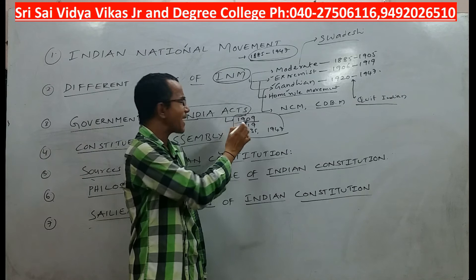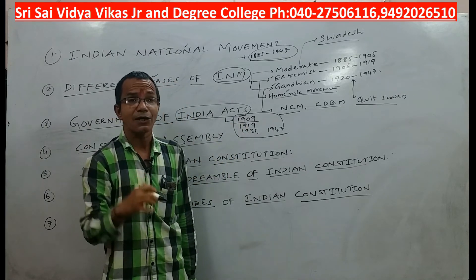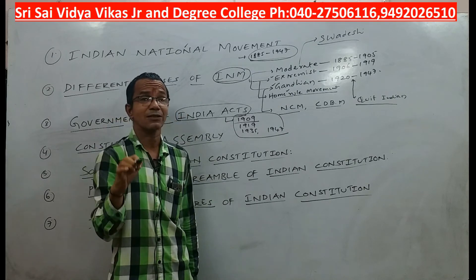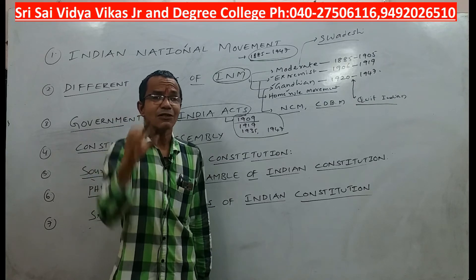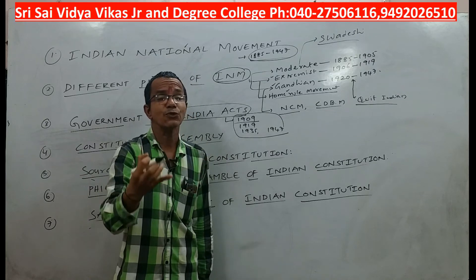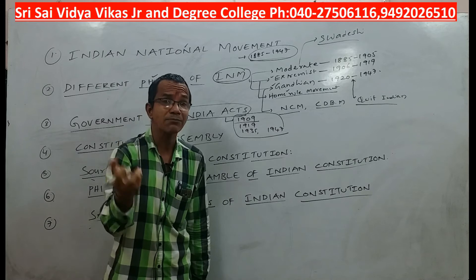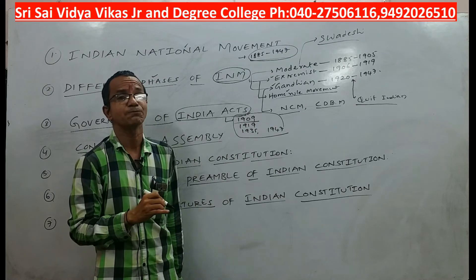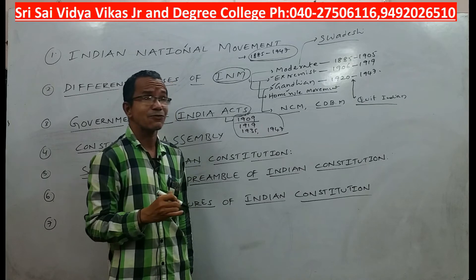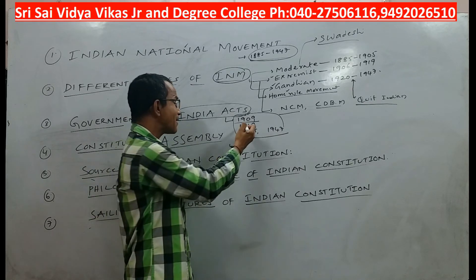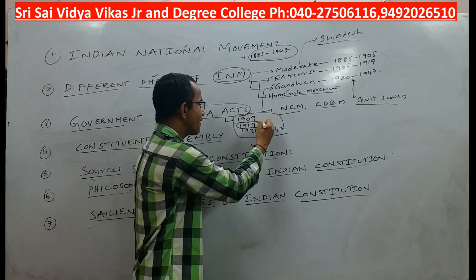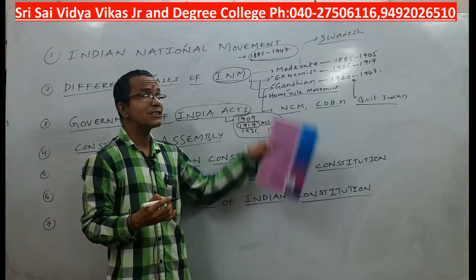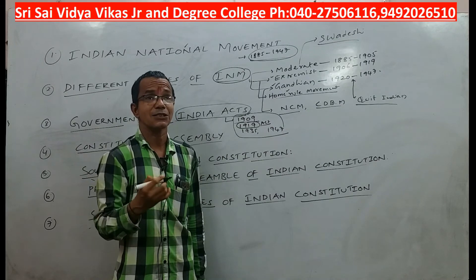Through the 1909 Act, the Britishers extended the numerical strength and at the same time created special electorates for the Muslims. There were a few controversial constitutional reform issues included through this act, but Indians were not satisfied. So the British government introduced the 1919 Act, which came because of the extremist movement and Lord Curzon's cruel rule, as people were not in a position to bear the British government.